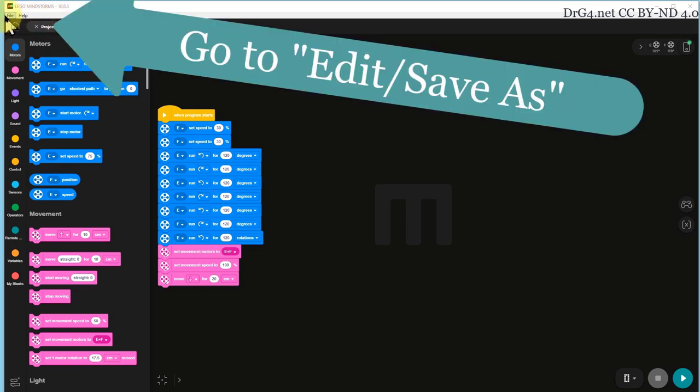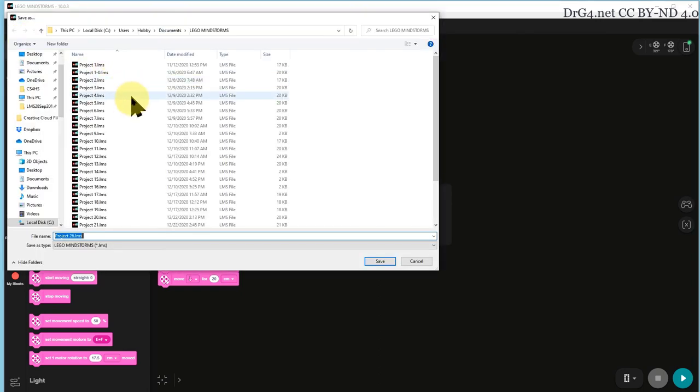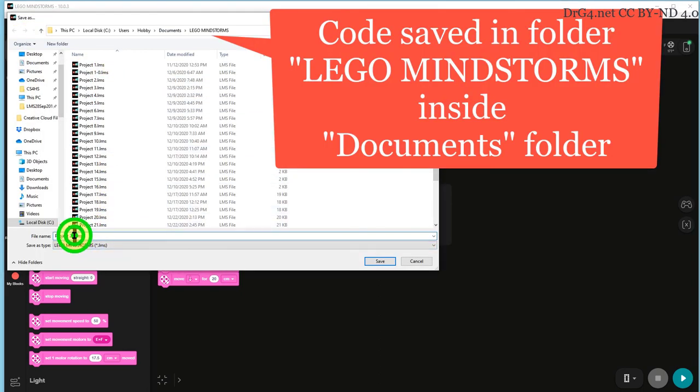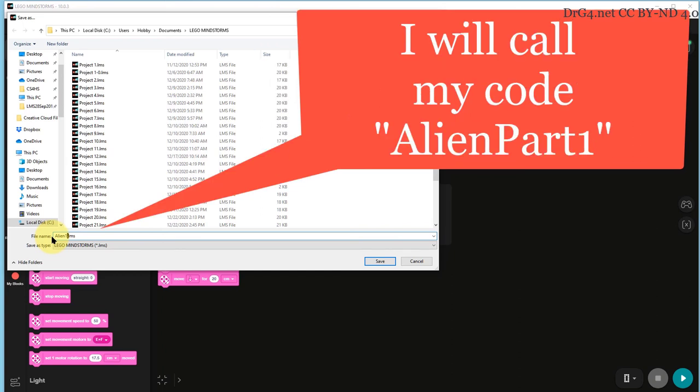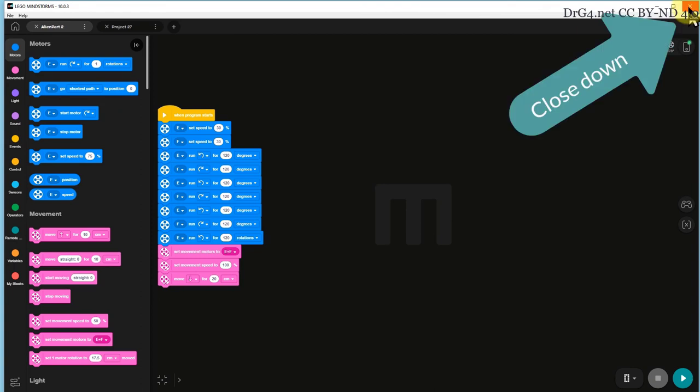Let's try and save it. Now, if we go to save as, you'll notice we can put it alien. It goes into my case in documents, Lego Mindstorms. Lego Mindstorms in the document folder on my C colon drive. And we've named that alien part one.